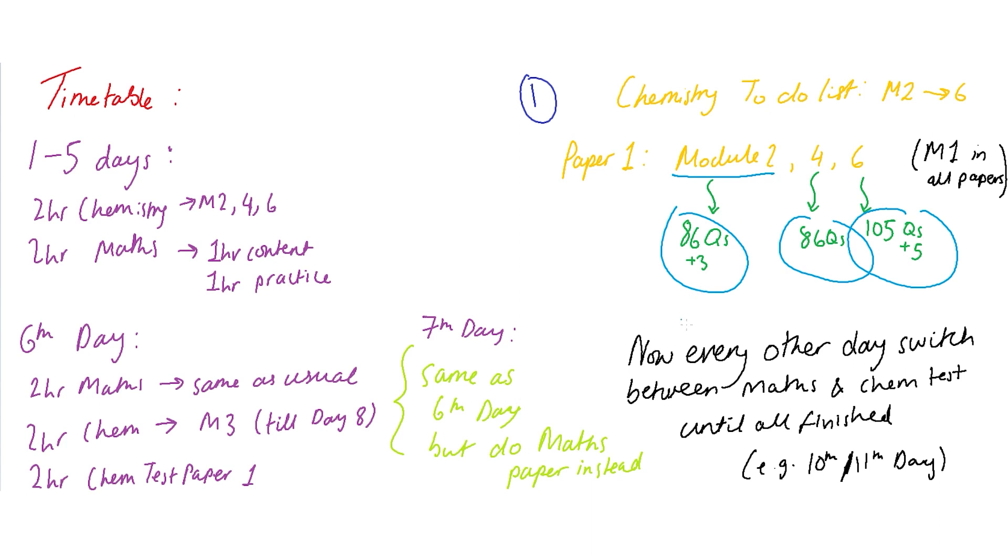And what this means plus 3 and plus 5 is after doing let's say module 2 what I would do is I would do exam style questions on those. So I'll do topic questions, what you normally do in school. So maybe you go on to your school share drive and you go on topic questions that they already have or you find them online or in textbooks that you have. So for module 2 I found out that those 3 questions that I wanted to put in the notes that I had. And for 6 I wanted to put 5 extra in.